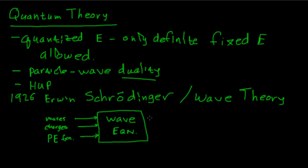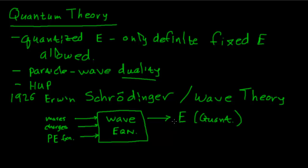So what comes out of this wave equation? Two things. First are energies — quantized energies. These energies can only take on fixed values. That comes directly out of the wave equation.